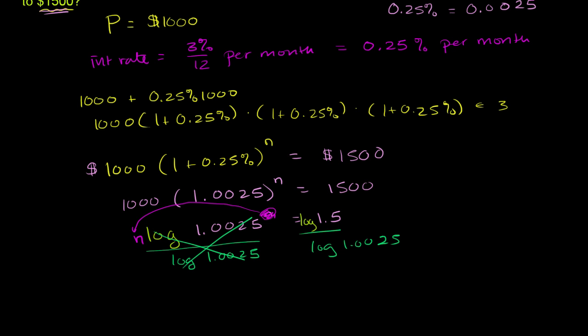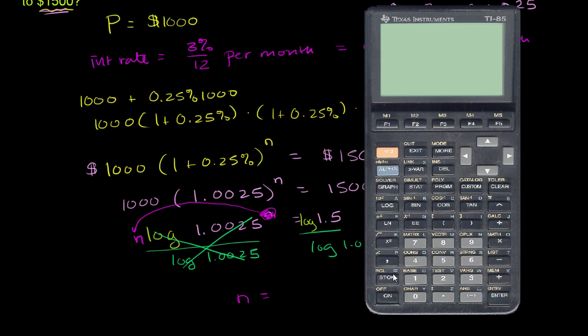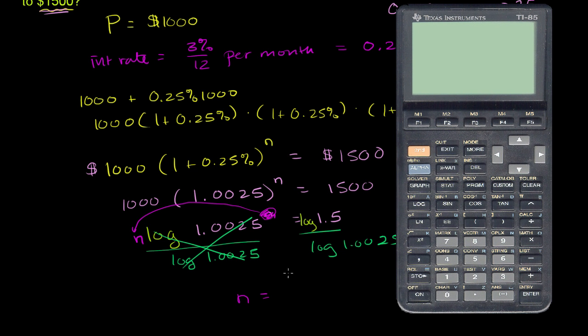We're left with n is equal to log of 1.5 divided by log of 1.0025. When I just write log like this, it implicitly means log base 10. Let's get our calculator out. Remember, n is going to be in months. So we have the logarithm of 1.5 divided by the logarithm of 1.0025, which gets us 162.38 months.